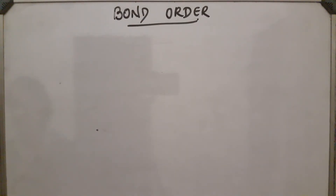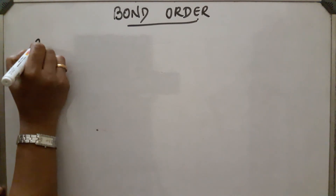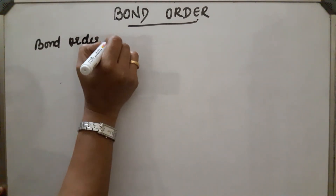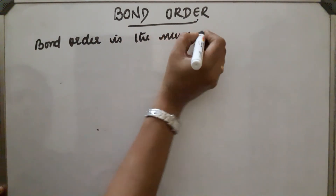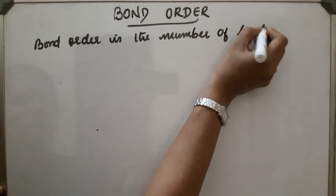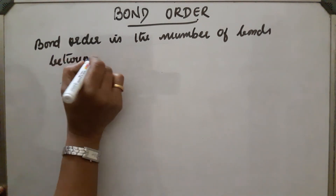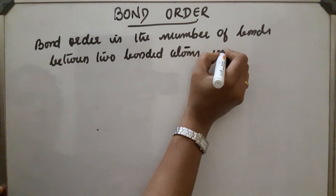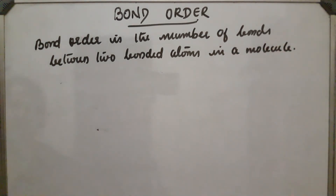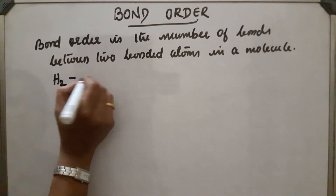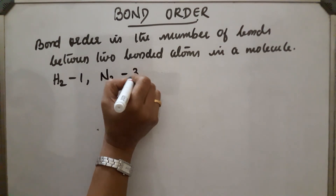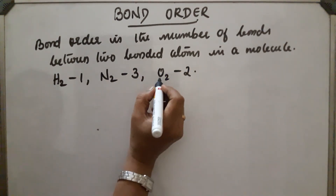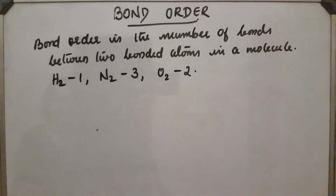Bond order. In Lewis's description, bond order is the number of bonds between two bonded atoms in a molecule. For example, H2 bond order is 1, N2 bond order is 3, and O2 bond order is 2, corresponding to single, triple, and double bonds respectively.